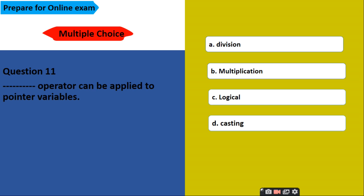Casting operator can be applied to pointer variable. Options are division operator, multiplication, logical, casting. And correct answer is D, casting operator can be applied to pointer variable.